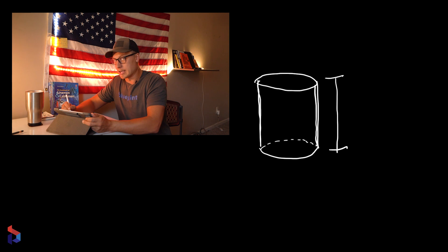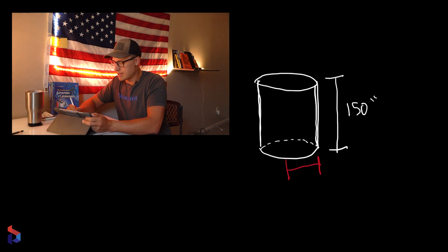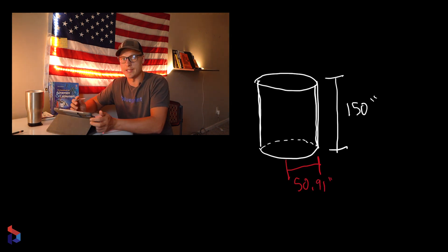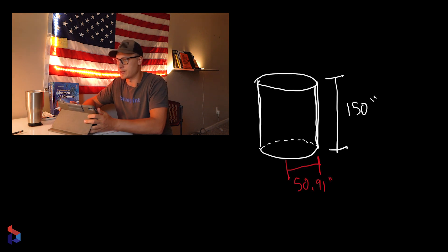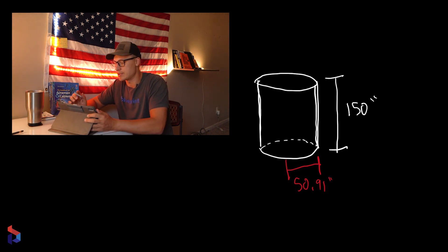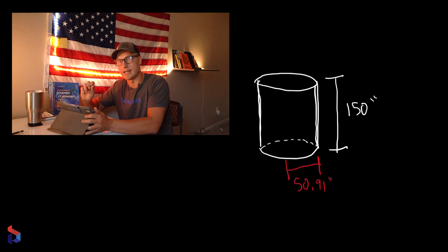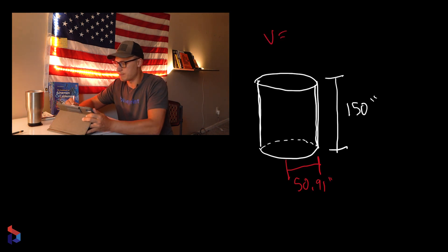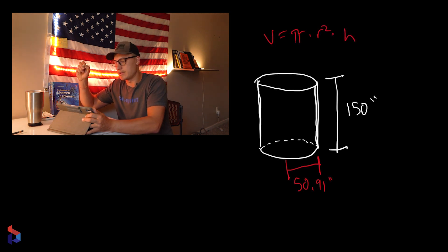If we draw a cylinder, we know the height is 150 inches, the radius is 50.91 inches, and the volume needs to be 5,285 gallons or 1,220,835 cubic inches. Now we know the dimensions we need to build the cylinder, just by using the volume equation: Volume = π × r² × h.